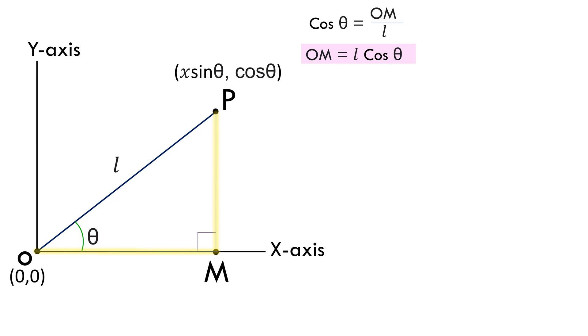Similarly, applying sine ratio for the angle theta in the same triangle POM, we get sin theta equals to PM by l, or PM equals to l sin theta.